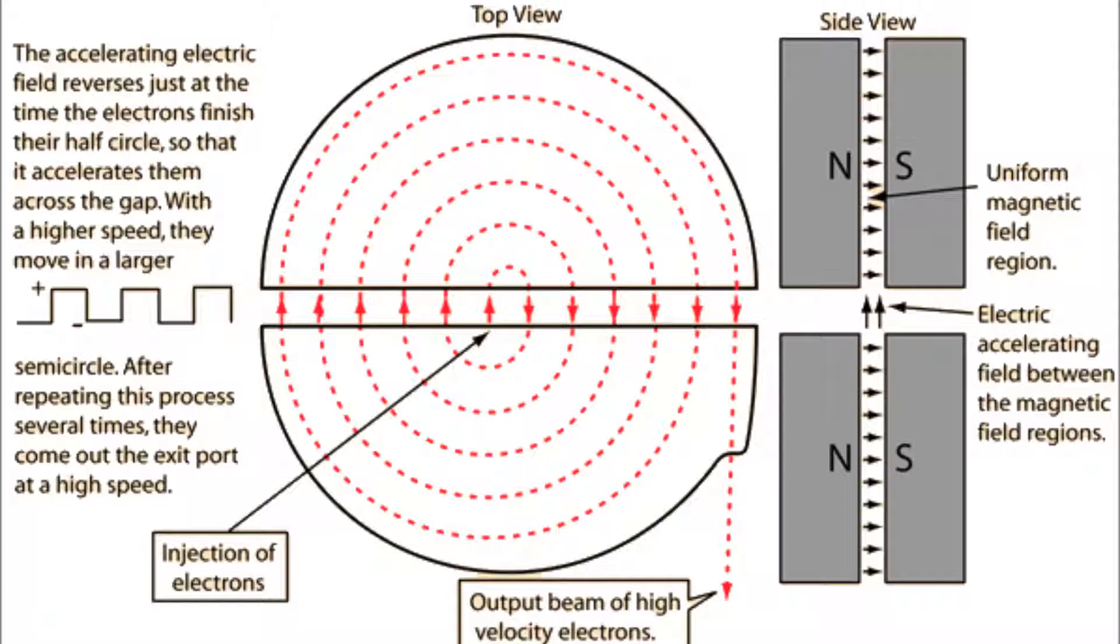The PD accelerates them into the next D, where they are once again forced on a circular path by the magnetic field. As it's an alternating PD, they can be accelerated into both halves every time on emerging from the D.